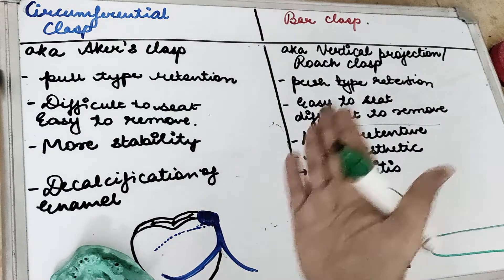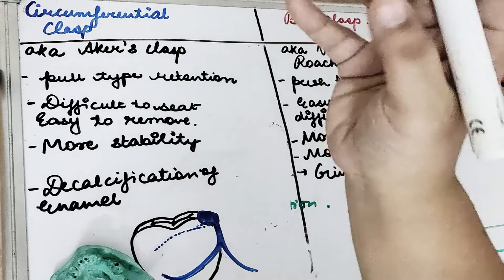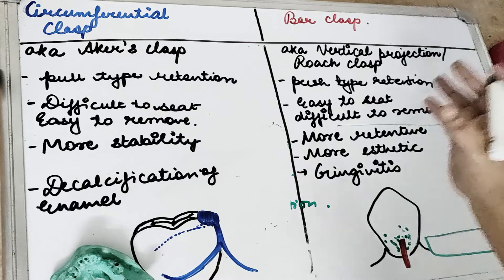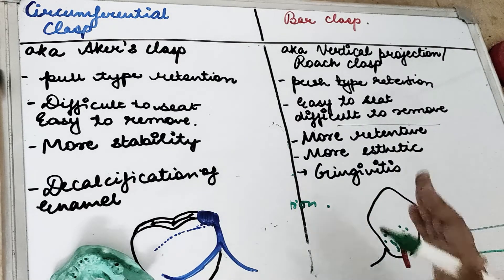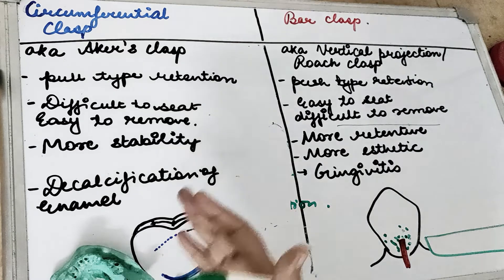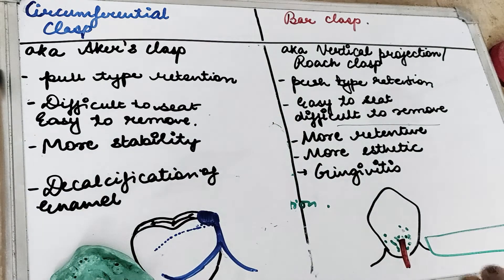In a nutshell: the circumferential clasp gives a pull type of retention and is more stable. On the other hand, a bar clasp — also known as the vertical projection clasp or the roach clasp — gives a push type of retention and is more retentive and more aesthetic.